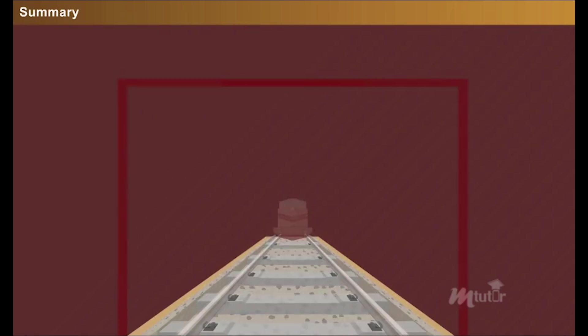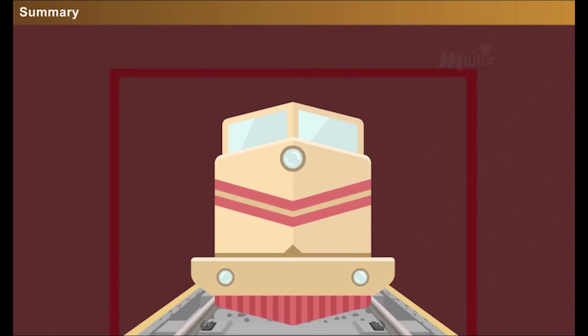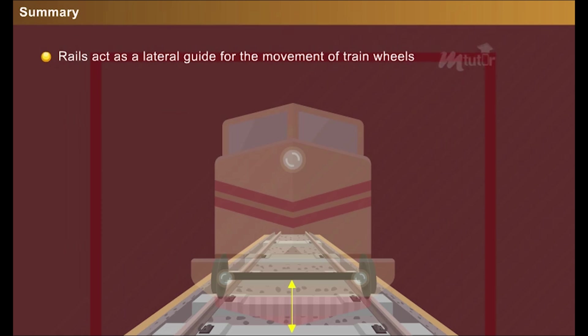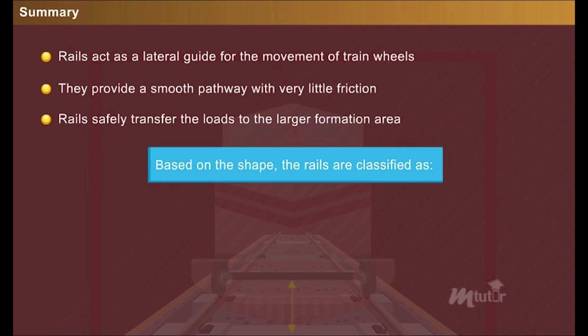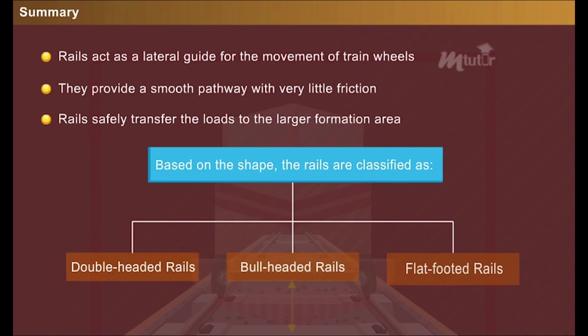Summary. Rails are the components of a railway track which provides a clear cover between the wheelbase and the sleeper ballast layer by uplifting the train from the ground level. Rails act as a lateral guide for the movement of train wheels. They provide a smooth pathway with very little friction. Rails safely transfer the loads to the larger formation area. Based on the shape, the rails are classified as double headed rails, bull headed rails, and flat footed rails.